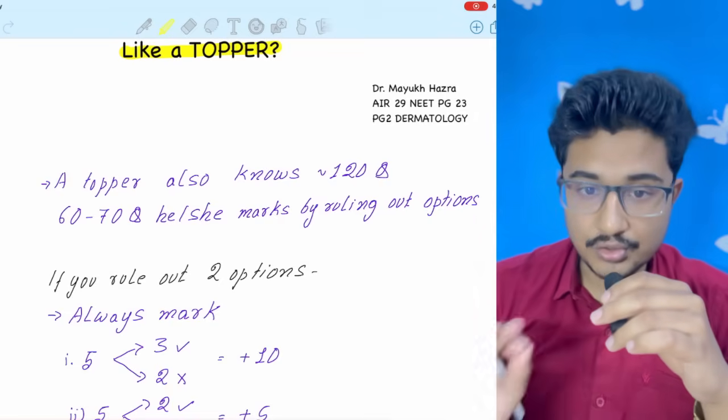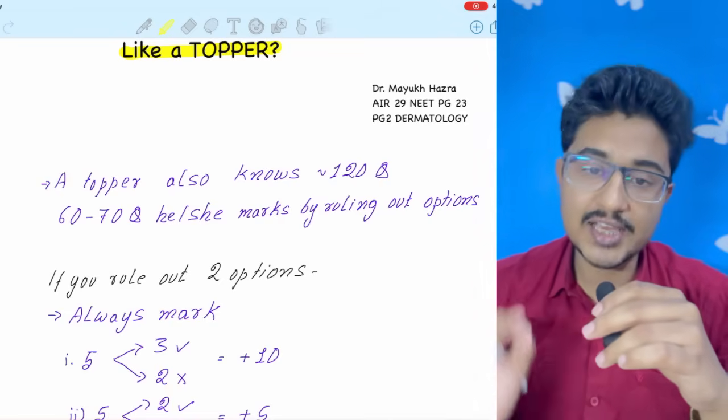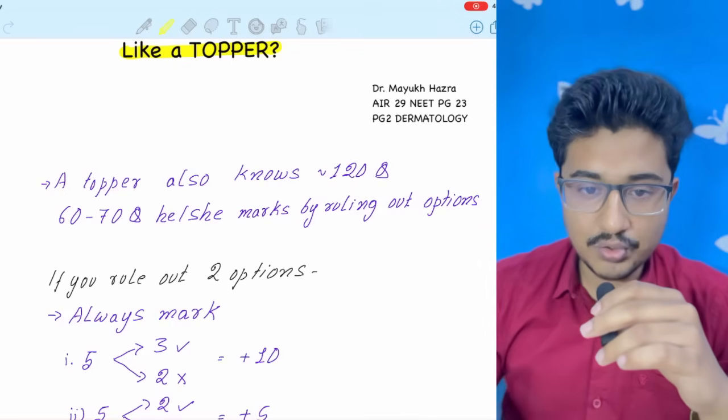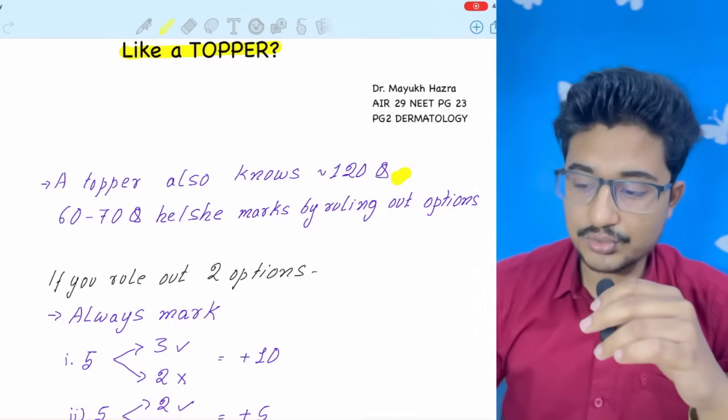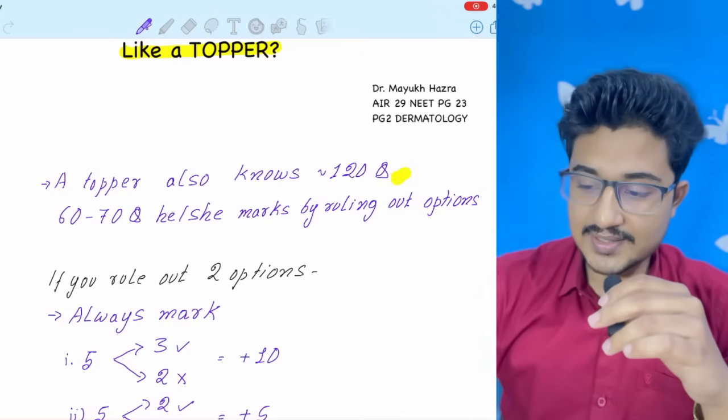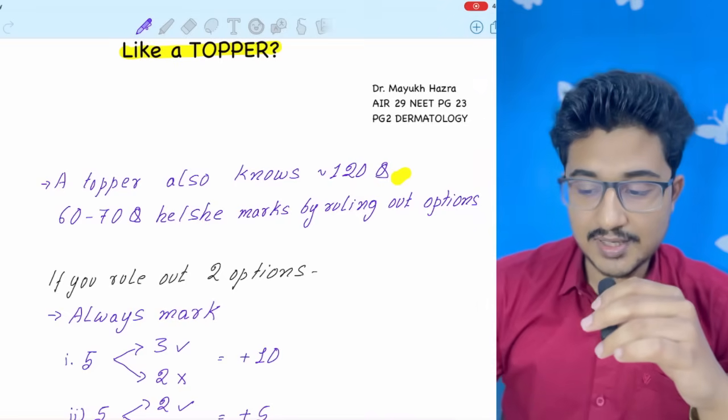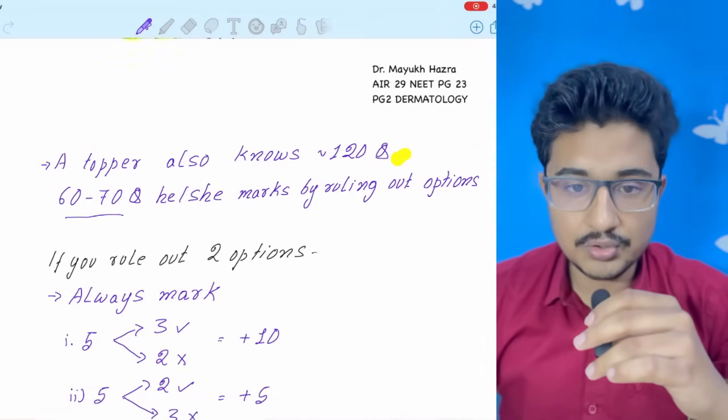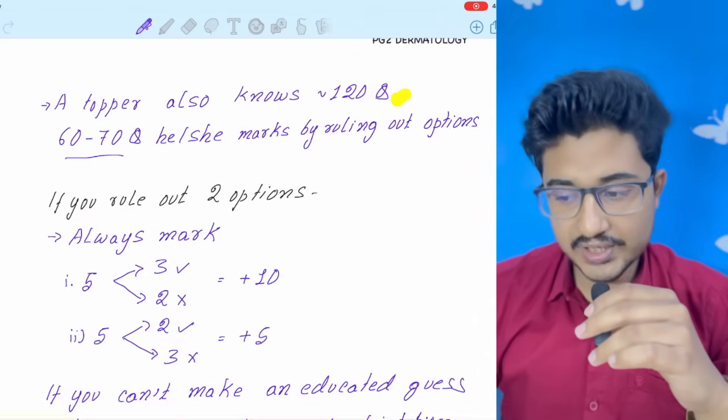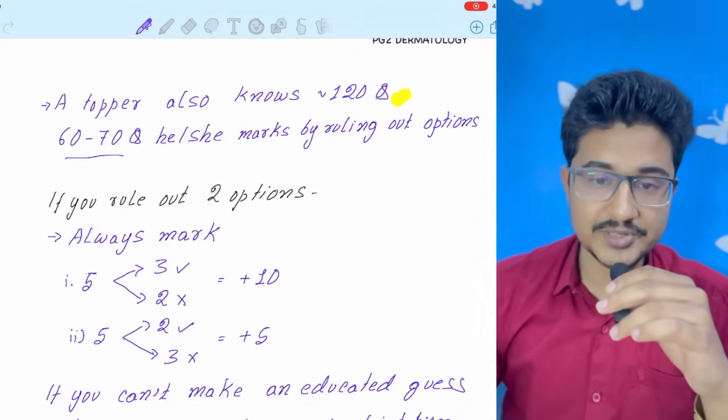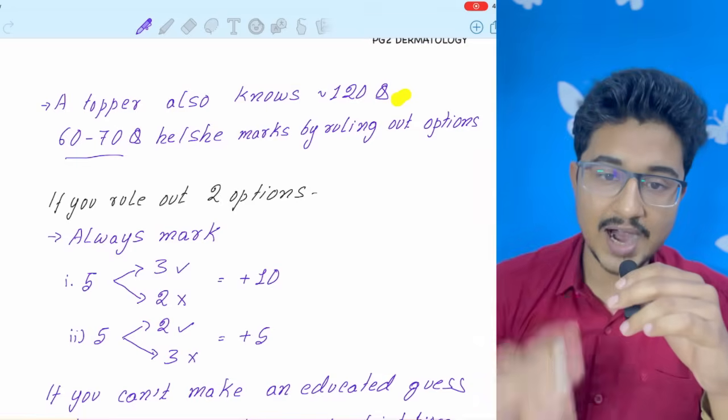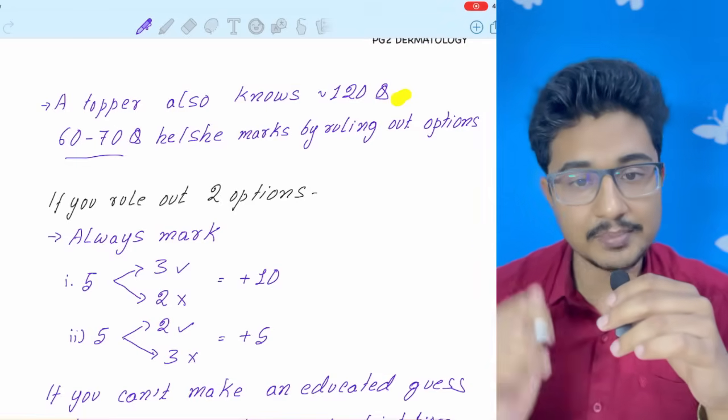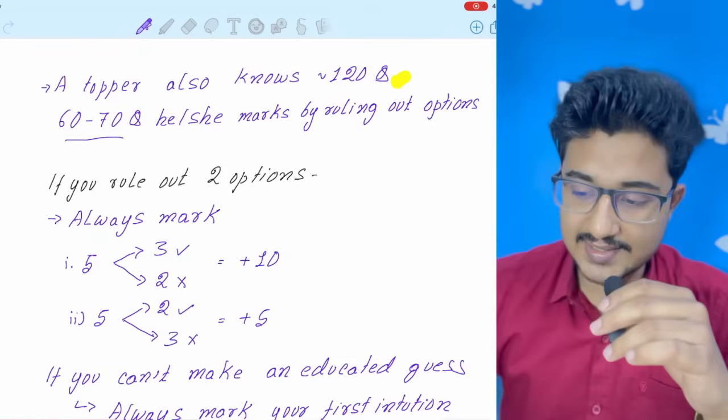A topper also doesn't know the answer to each and every question thrown in the exam. Hardly among 200 questions, he or she knows 120 questions. The rest, he or she marks approximately 60 to 70 questions by ruling out options. Now, in real exam scenario, if you have ruled out two options, then you need to mark that question. If you are not marking it, it is a criminal offense.